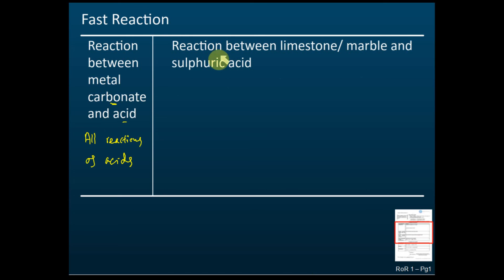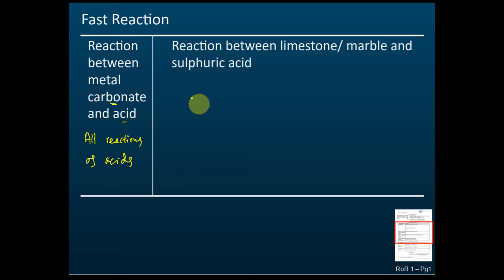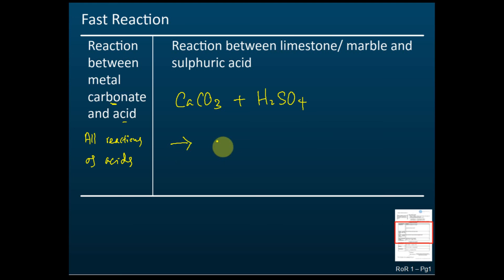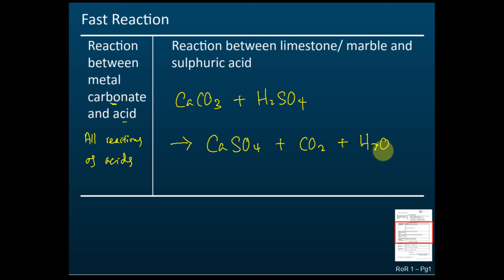The next fast reaction is the reaction of acid with metal carbonates. The carbonate here is limestone or marble, and the acid is sulfuric acid. Limestone and marble are both calcium carbonate, CaCO₃. So calcium carbonate plus sulfuric acid produces calcium sulfate, water, and carbon dioxide. This equation is already balanced.